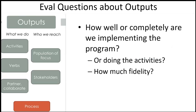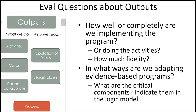Other evaluation questions we might ask about outputs are: how well or completely are we implementing the program? If we're working on implementing an evidence-based program, we can ask with how much fidelity are we implementing our activities. Do we have a fidelity checklist? Are there any critical components that we're missing? If we're adapting evidence-based programs — which we often do to make sure they're appropriate for our communities — do we have all of the critical components? If in our logic model we have the critical components clearly identified, then in our process evaluation we can focus on those parts of our activities and determine the extent to which we are implementing the critical components completely and with fidelity.